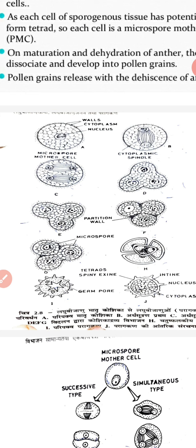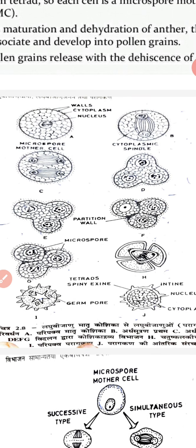In the form of 4 nuclei, the nuclei are seen in the form of a tetrahedron — this form is called tetrahedral. Therefore, the nucleus is found in a tetrahedral arrangement, and 4 cells can be formed from these 4 nuclei.